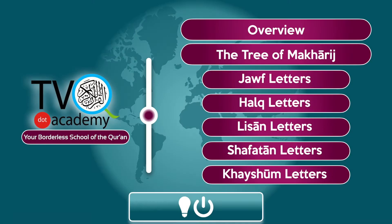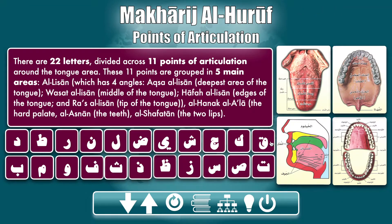This letter is from among the letters of the lisan — the letters of the tongue. It comes after we have covered qaf, kaf, jim, shin, ya, ba and lam. Today we have noon. As a matter of fact, noon, lam, and ra come from the same point of articulation, just millimeters from one another. So we have noon today.